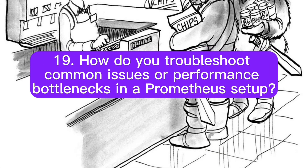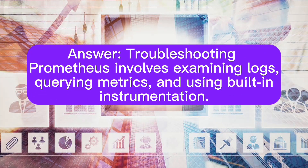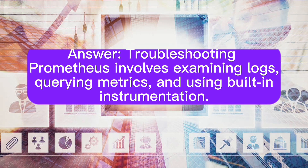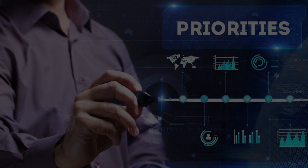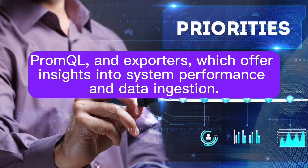How do you troubleshoot common issues or performance bottlenecks in a Prometheus setup? Troubleshooting Prometheus involves examining logs, querying metrics, and using built-in instrumentation. Key tools for troubleshooting include Prometheus's expression browser, PromQL, and exporters, which offer insights into system performance and data ingestion.